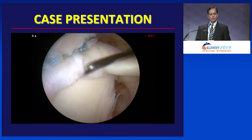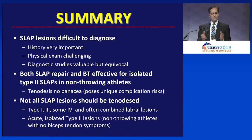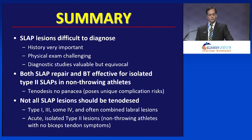In summary: SLAP lesions are difficult to diagnose. The history is very important. Physical exam is challenging. Diagnostic studies are equivocal at best. Both SLAP repair and biceps tenodesis are effective for isolated type 2 SLAPs. Remember, tenodesis is no panacea — there are some unique and potentially severe complications you would never see with a failed SLAP repair. Not all SLAP lesions should be tenodesis. Those acute isolated type 2 lesions in non-throwing athletes, especially with no biceps tendon symptoms, can be repaired.